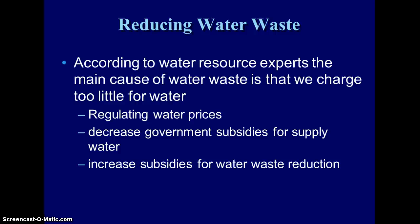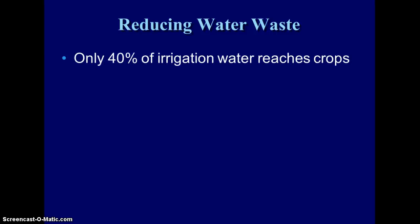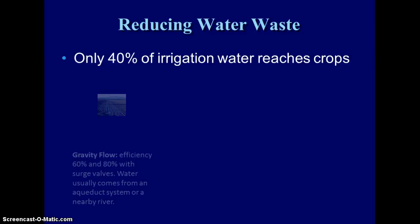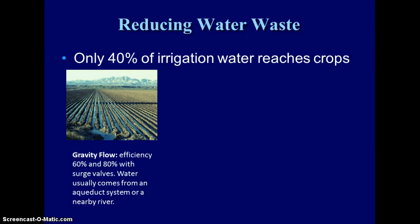One of the biggest reasons experts think we are wasting water is that we don't charge enough for it. If we charge more for water, people would use less. If we could decrease some of the subsidies that the government pays to keep water prices artificially low, that would decrease the amount of water wasted. With spray irrigation, most of the water evaporates — only 40% of it actually reaches crops.